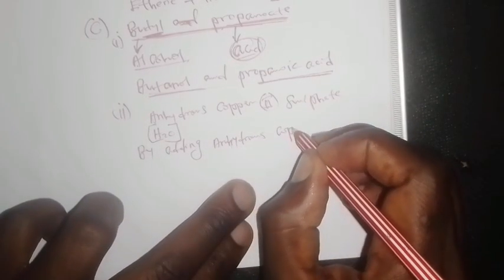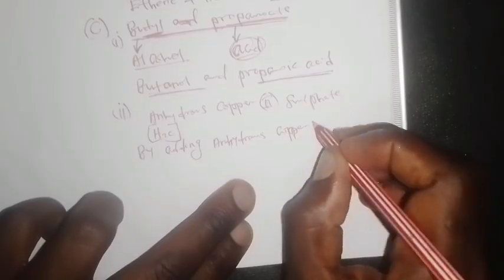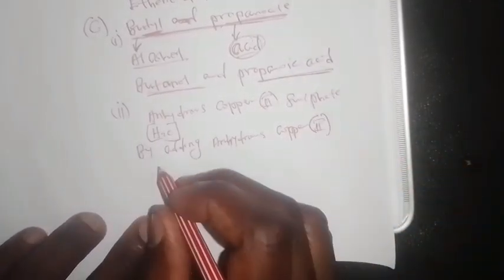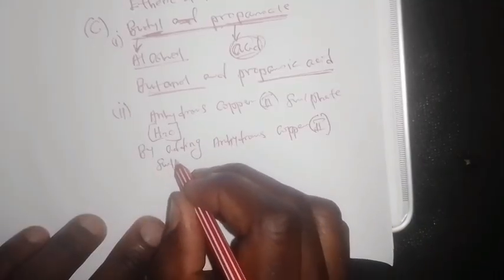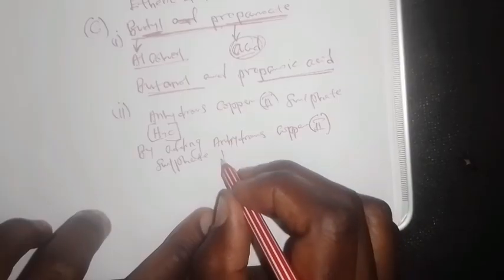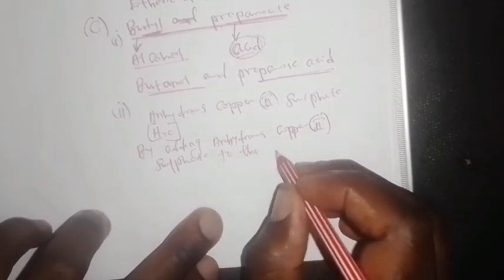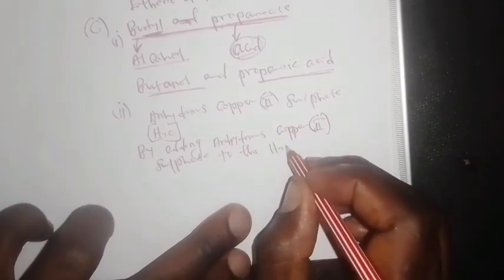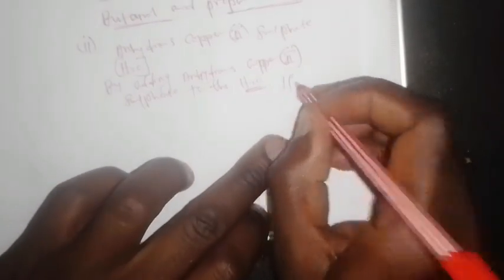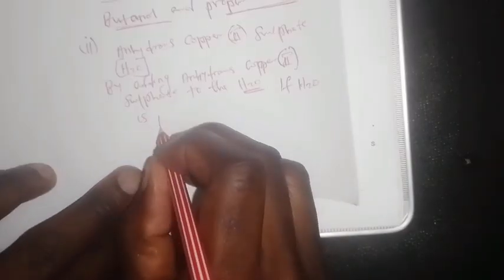You add the anhydrous copper sulfate to the H₂O. Now if H₂O is present, this will cause a colour change.